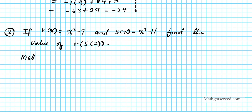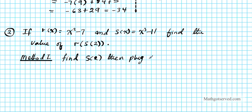Let's do this using Method 1. In Method 1, what we're going to do is evaluate the interior function and then plug it into the exterior function — starting from the inside. We're going to find s of 2, which is this function evaluated at x equals 2. Then plug in your result into the parent function, which is r of x.